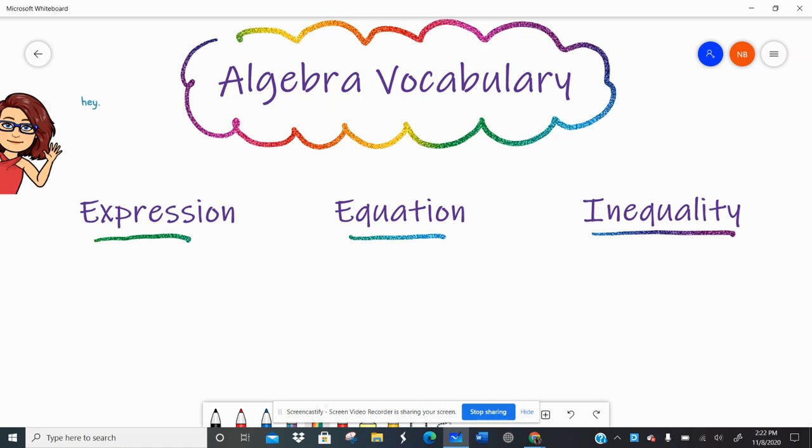So an expression has an operation, right? So I can have like 8k, so that's 8 times the variable k, or 4x plus 5. But what I don't have is an equal sign. Expressions can be simplified, but they cannot be solved, right? They do not have equal signs. So an expression does not have an equal sign. No equal sign.